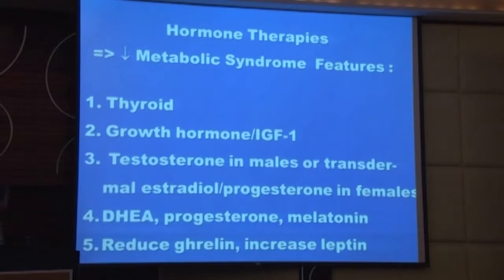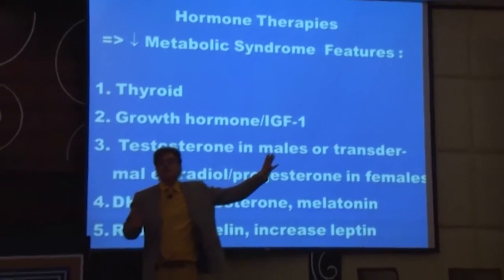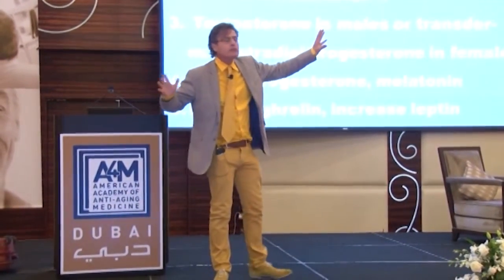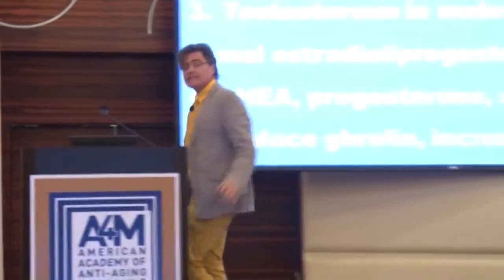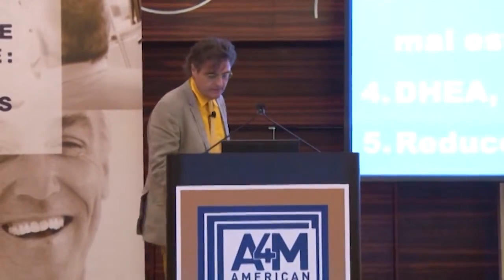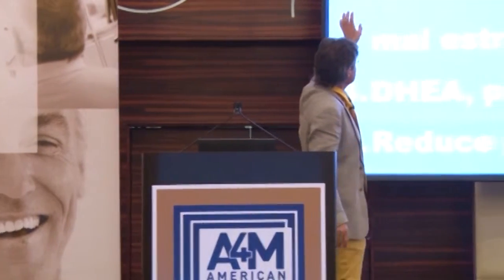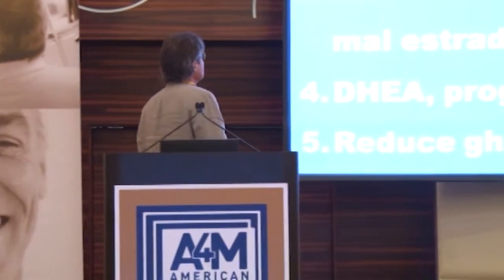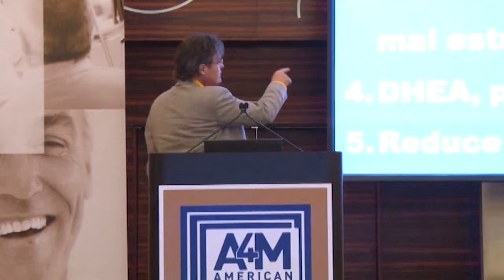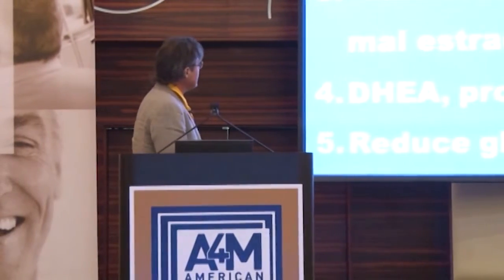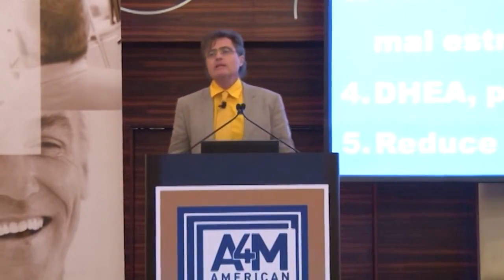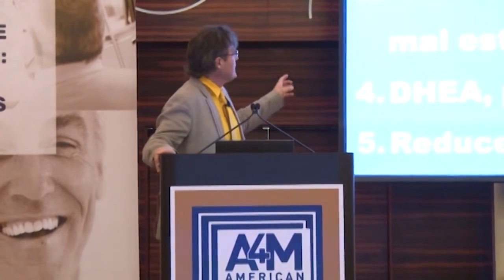To reduce abdominal obesity and metabolic syndrome, hormone treatments are as important as — arguably more important than — diet, because many hormonal therapies increase muscle mass and reduce fat mass, whereas standard weight loss programs often reduce both fat and muscle. Key therapies include thyroid hormone, growth hormone, testosterone in men, transdermal estradiol and progesterone in women (not oral estradiol), DHEA, and melatonin. You should also reduce ghrelin — an appetite-stimulating hormone — and increase leptin.